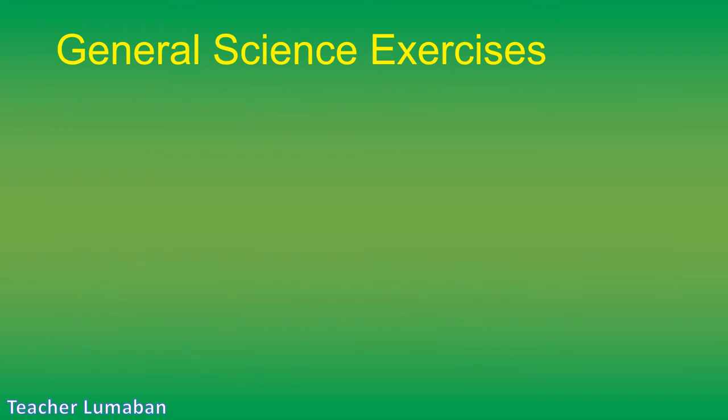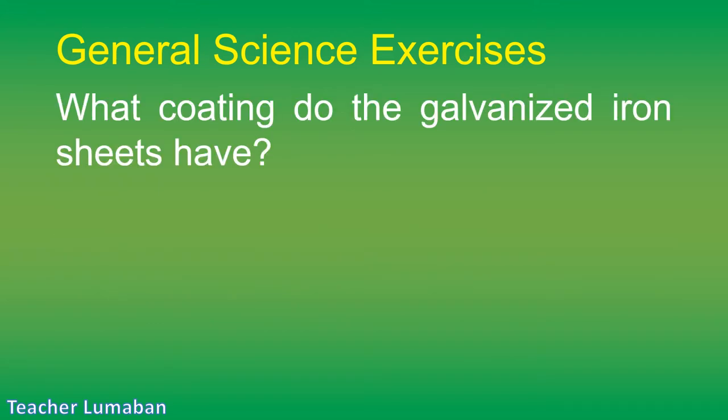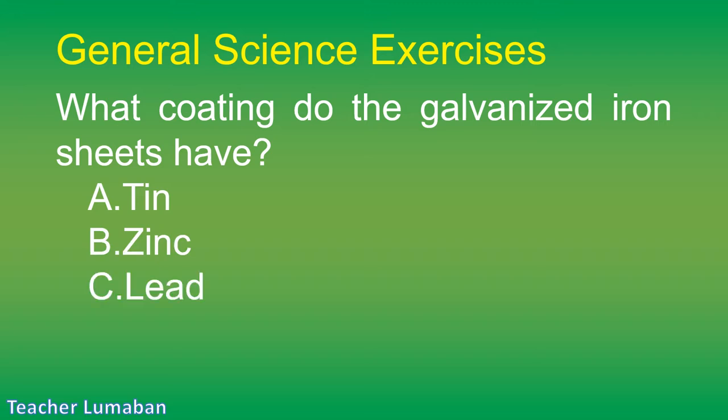What coating do galvanized iron sheets have? Letter A: tin. Letter B: zinc. Letter C: lead. Letter D: chromium.